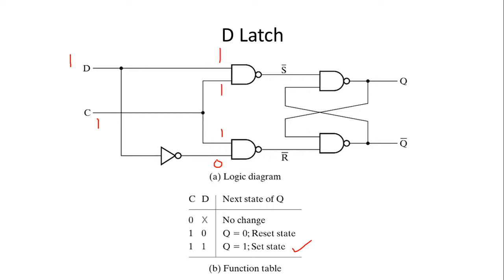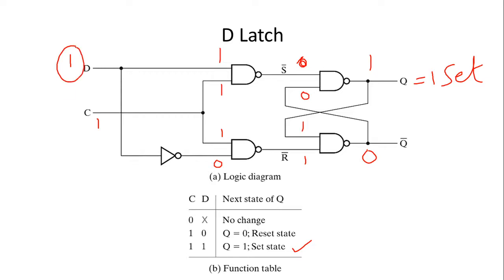With D=1 and clock=1: the inputs 1-1 to the first NAND gate produce 0, and 1-0 to the second produces 1. The internal AND gives 0 and the NOT produces 1, so Q is 1. This 1 feeds back to the second NAND gate — 1-1 produces 0, which feeds back up: 0-0 gives 1, confirming Q=1. So if D is 1, then Q is 1 — this is the set state.